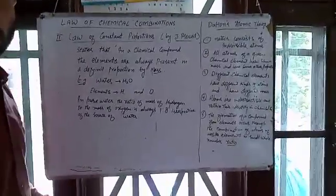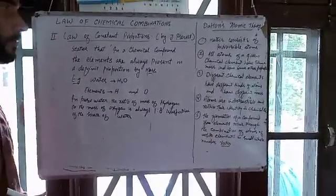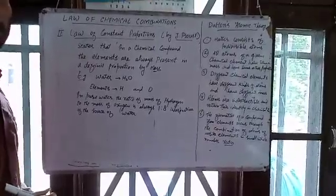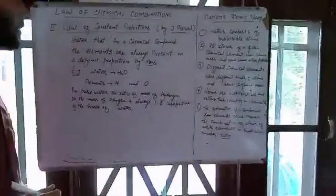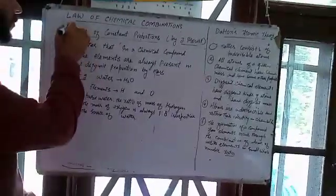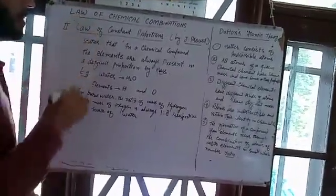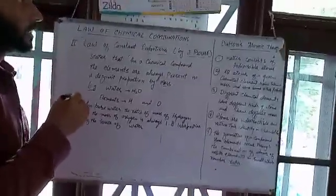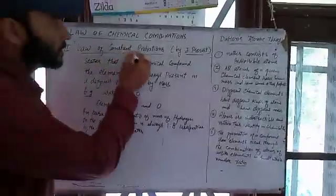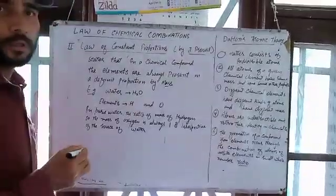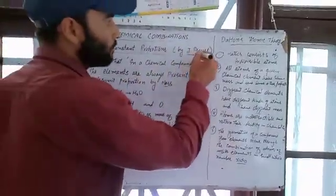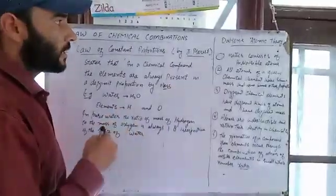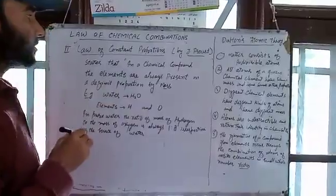Hello dear students. In the previous video we discussed the first law of chemical combination, and now we are discussing the second law of chemical combination, that is the law of constant proportions, which was given by Joseph Proust. He was a scientist who gave this second law.